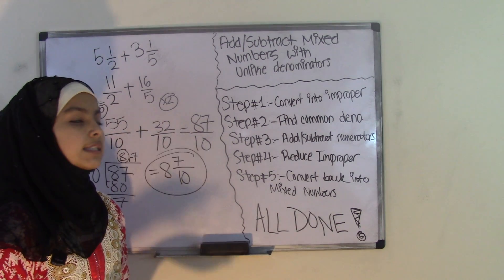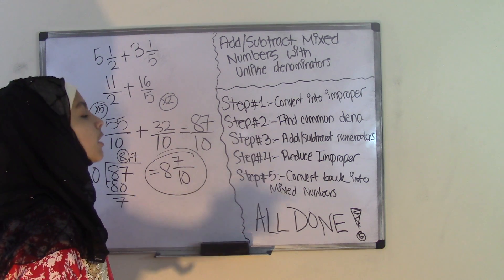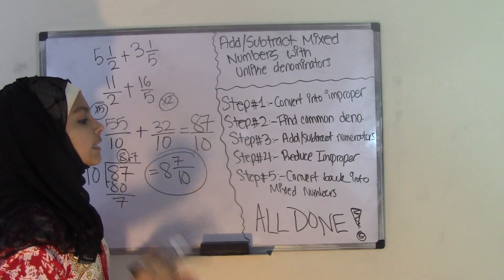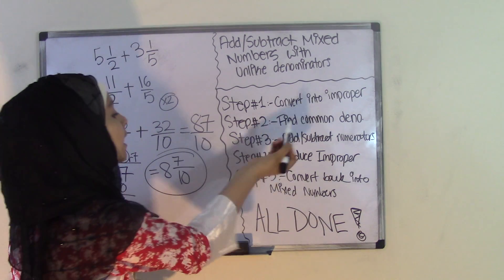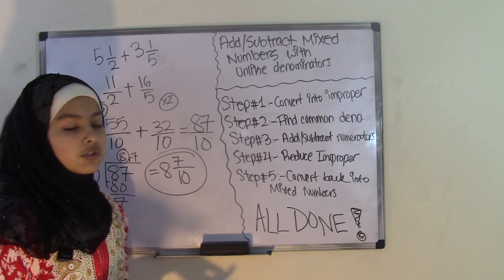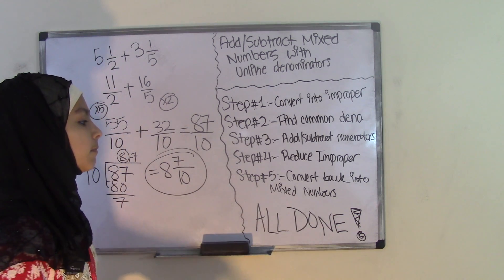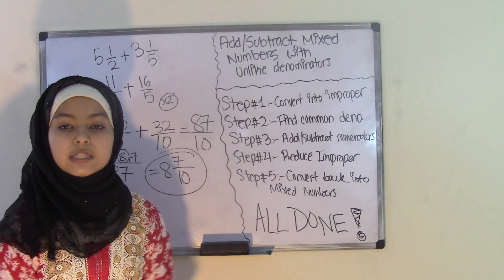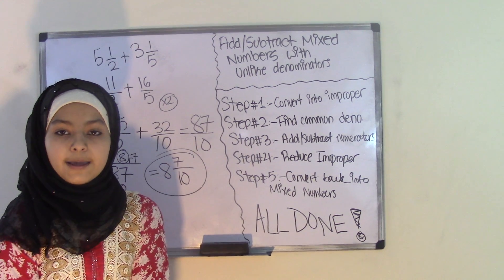All it took was five simple steps, and keep in mind these are the same steps for both addition and subtraction — the only difference is step three would be subtract instead of add. Hope you guys understood this topic. If you want extra practice problems, please visit our website at broinesmathclub.com. We'll see you guys next time, bye!